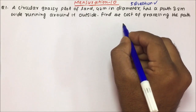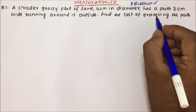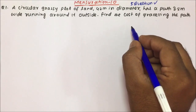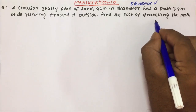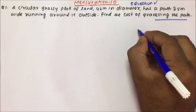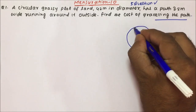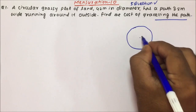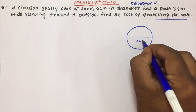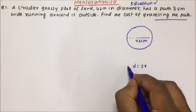Question number one: a circular grassy plot of land 42 meters in diameter has a path 3.5 meters wide running around it on the outside. Find the cost of graveling the path. This is a very important question.